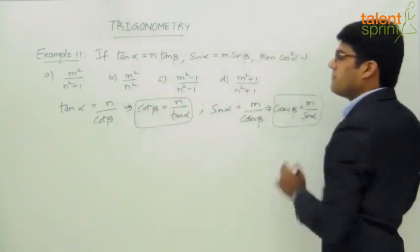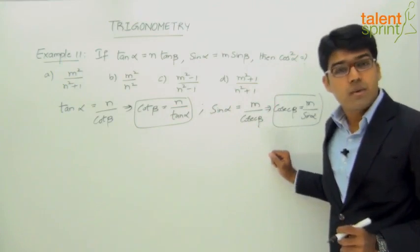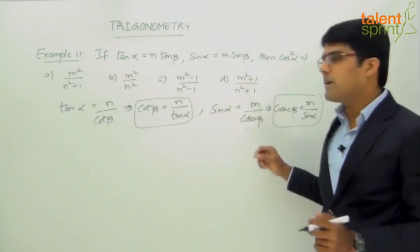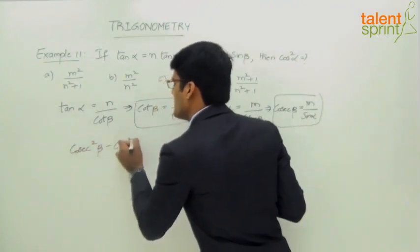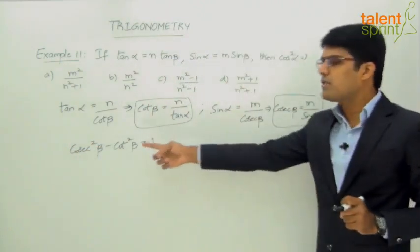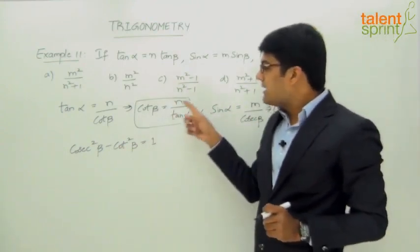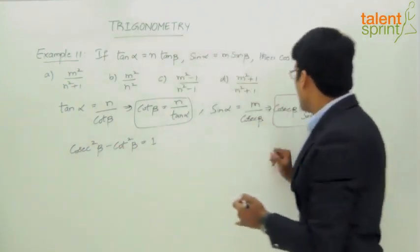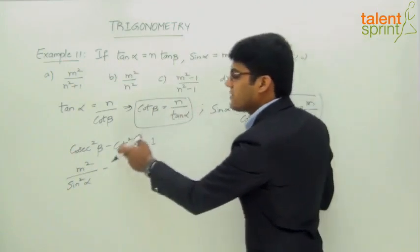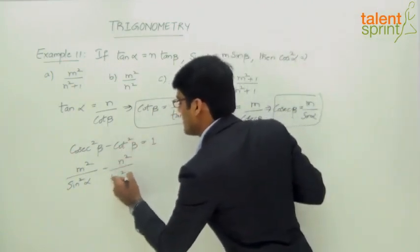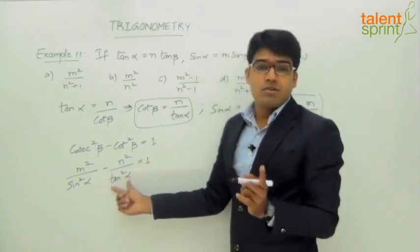We have a trigonometric identity in terms of cot and cosecant: cosec²θ - cot²θ = 1. Applying this for angle β: cosec²β - cot²β = 1. Substituting cosec β = m/sin α and cot β = n/tan α, we get m²/sin²α minus n²/tan²α equals 1.